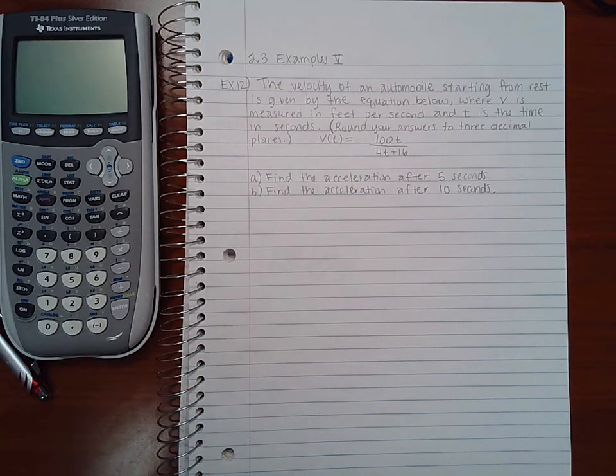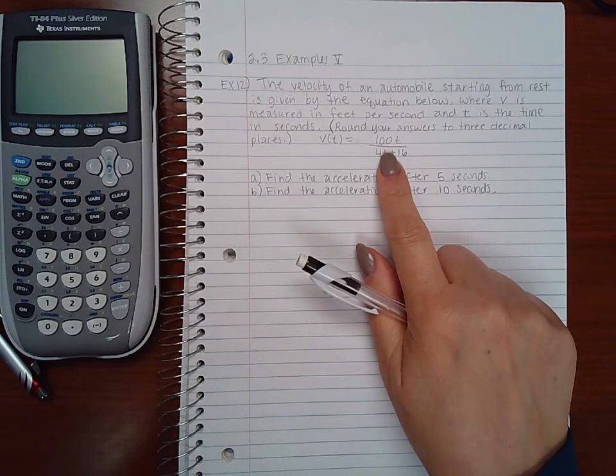It says the velocity of an automobile starting from rest is given by the equation below, where v is measured in feet per second and t is the time in seconds. Round your answers to three decimal places. So here they give me the function.